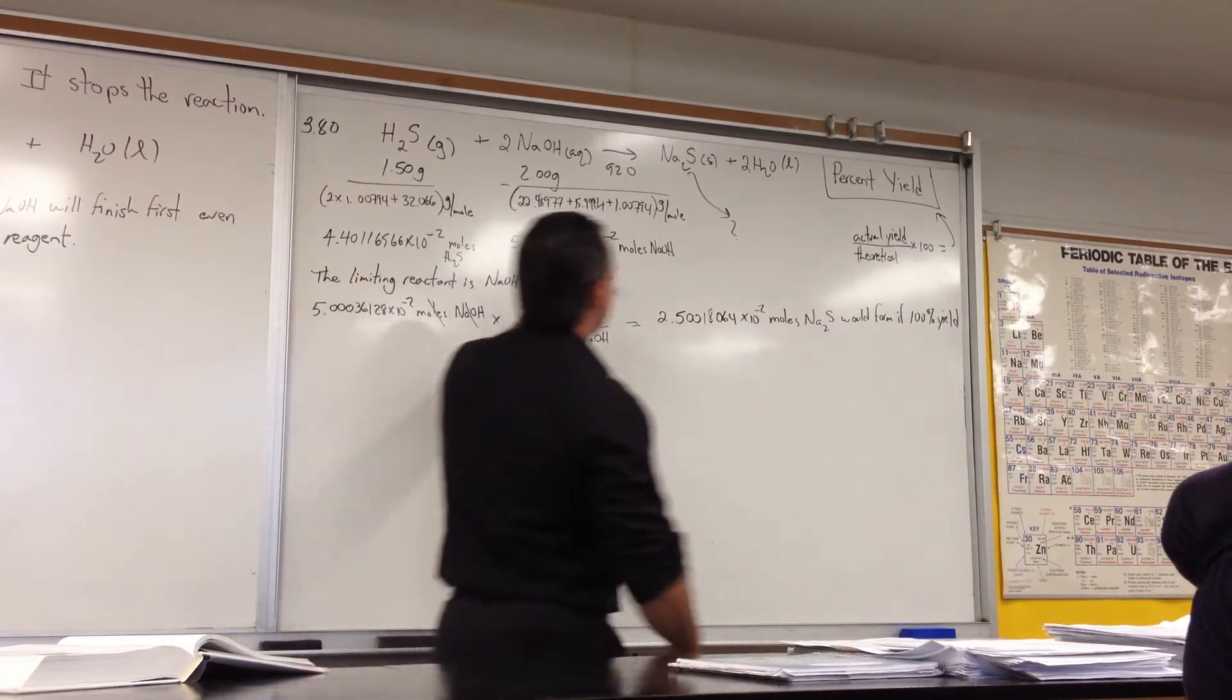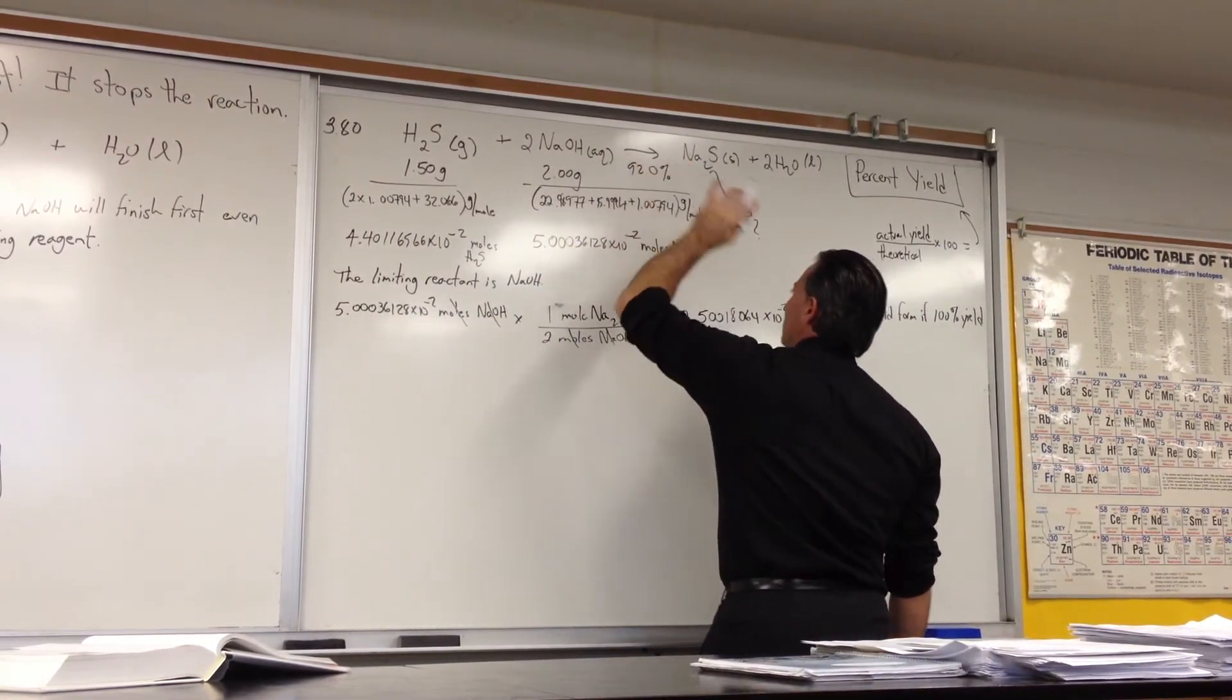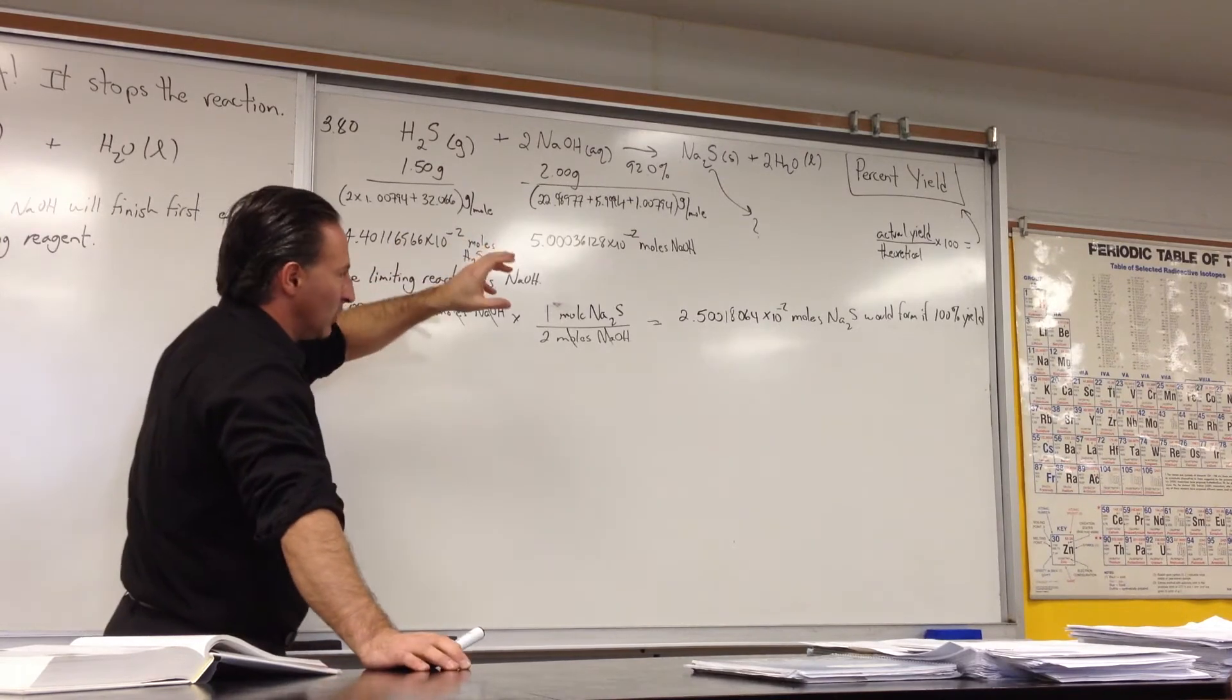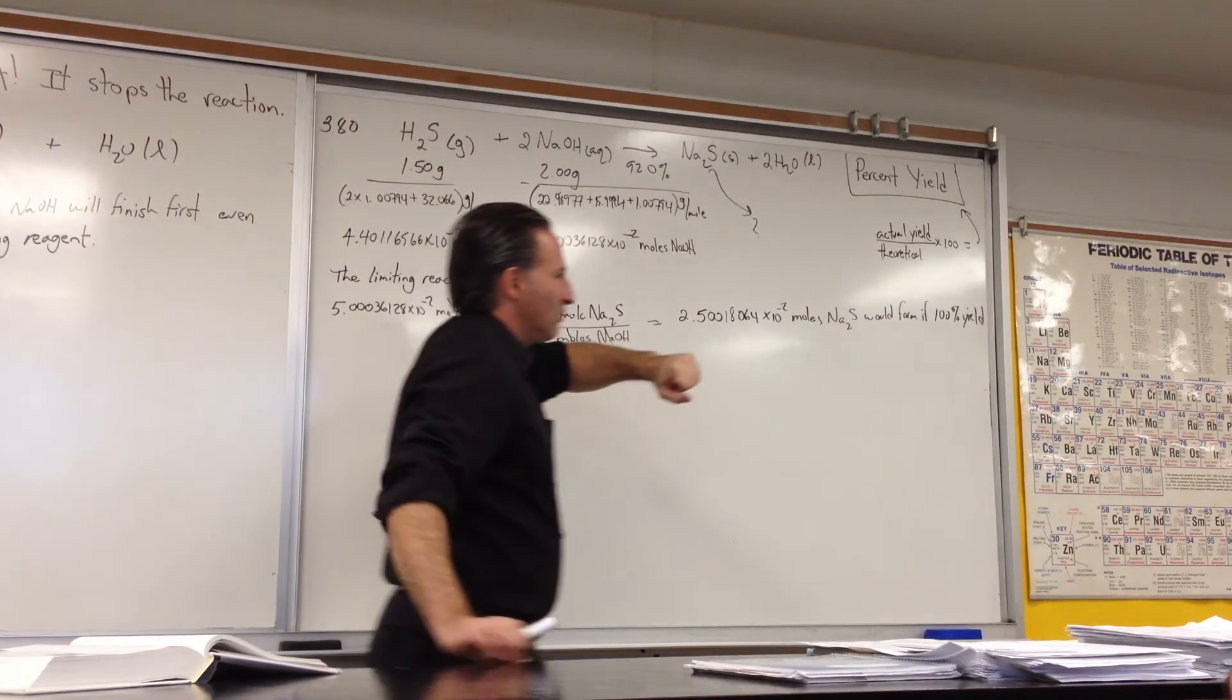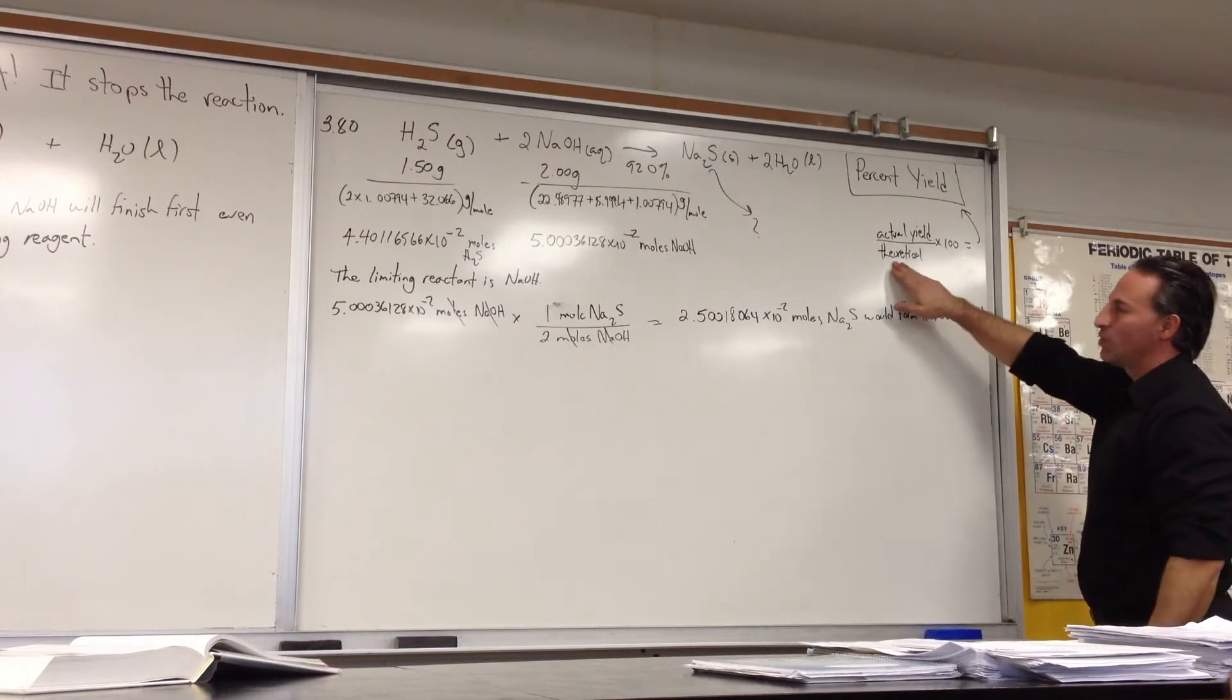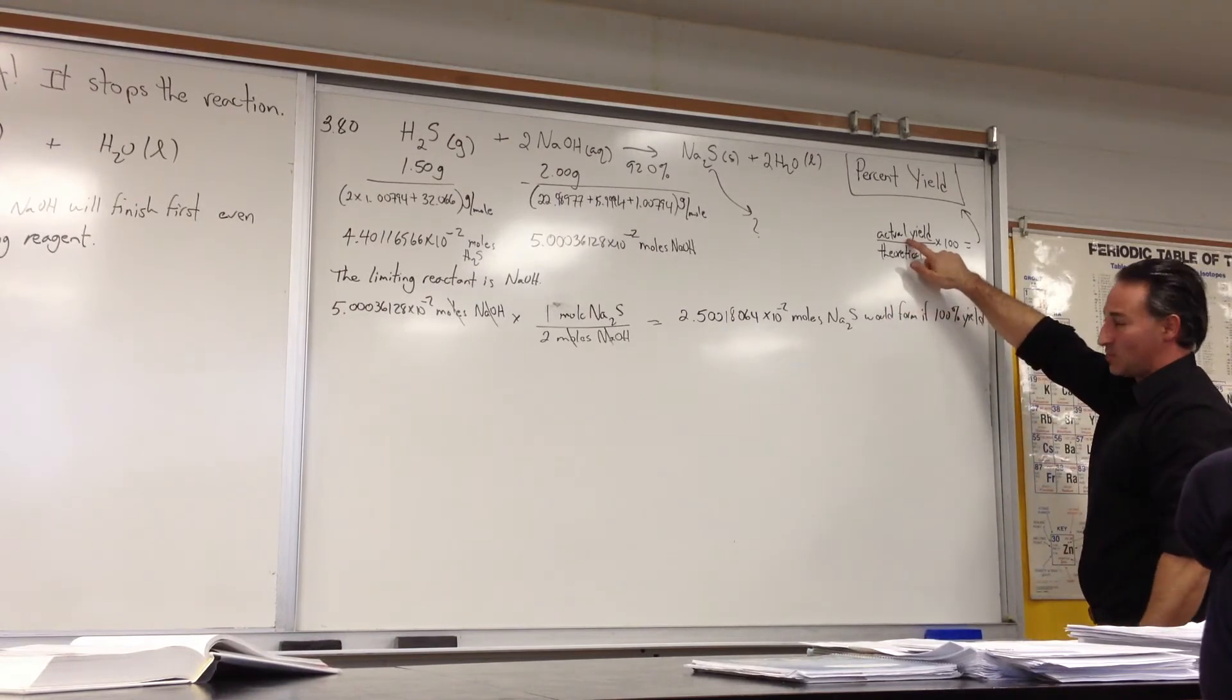They tell you that the reaction proceeds with 92% yield. We're not going to use this idea until the very end. We're going to do all the calculations the same as always, except at the very end we're going to calculate the percent yield, the actual yield versus the theoretical yield. By the way, the definition of percent yield is actual yield divided by the theoretical yield times 100%. This is what you think you would get if everything reacted completely. This is what you actually get.